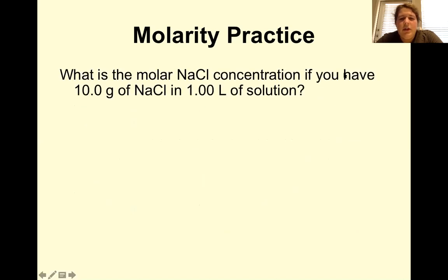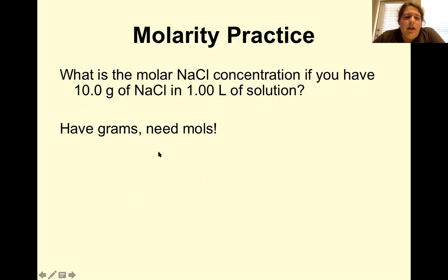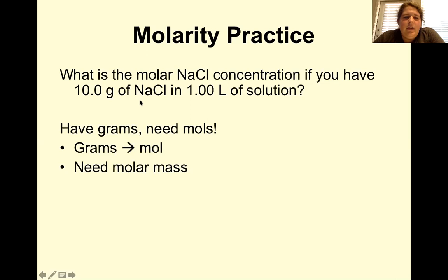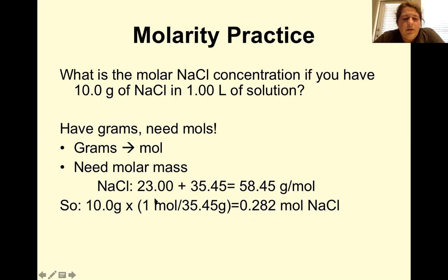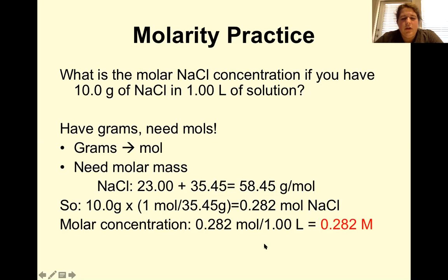What is the concentration if you have 10 grams of sodium chloride in 1 liter of solution? Here we're given grams, not moles, so we need to convert. The molar mass of NaCl is sodium (23 g/mol) plus chlorine (35.5 g/mol) = 58.5 grams per mole. So: 10 grams ÷ 58.5 g/mol gives us the moles of NaCl, then divide by 1 liter to find molarity.